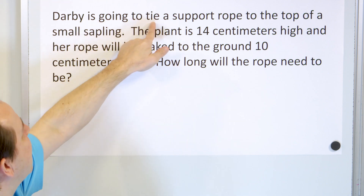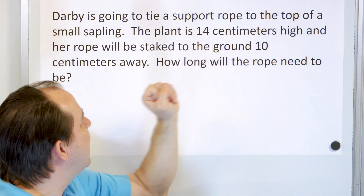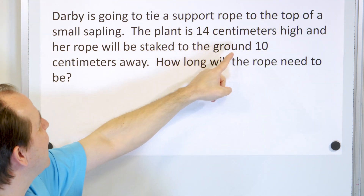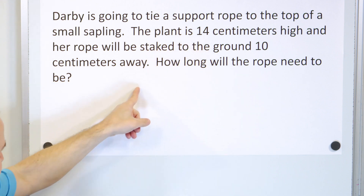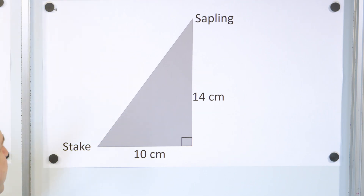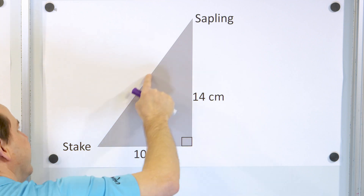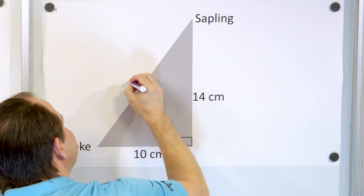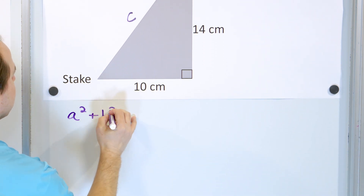Here's our last problem. Darby is going to tie a support rope to the top of a small sapling. The plant is 14 centimeters high and her rope will be staked to the ground 10 centimeters away. How long will the rope need to be? We're staking a tree, so it's going to form a right triangle. Since it's a right triangle, a² + b² = c².